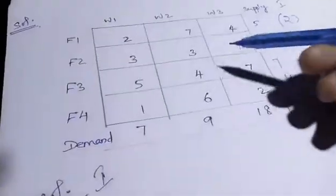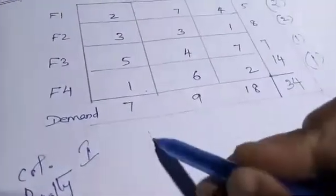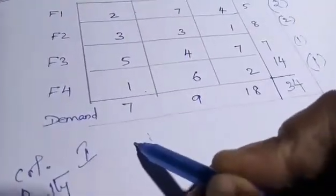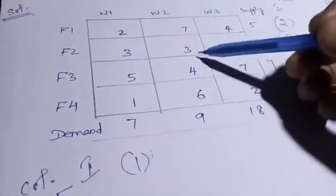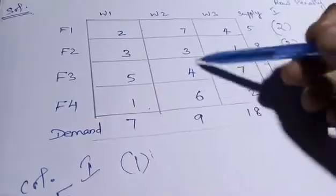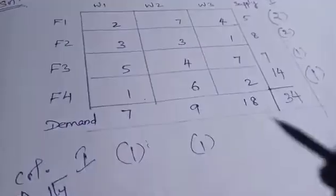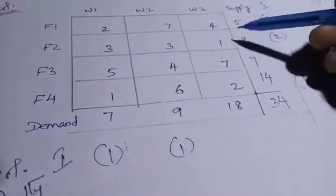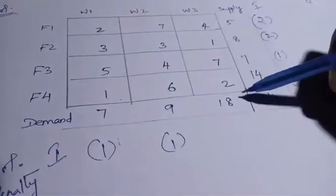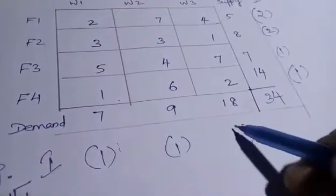For the column penalties: column 1 values include 2, 3; 2 minus 1 equals 1. Column 2 has 7, 3, 4, 6; 4 minus 3 equals 1. Column 3 has 4, 1, 7, 2; 2 minus 1 equals 1. So column penalties are 1, 1, 1 and row penalties are 2, 2, 1, 1.